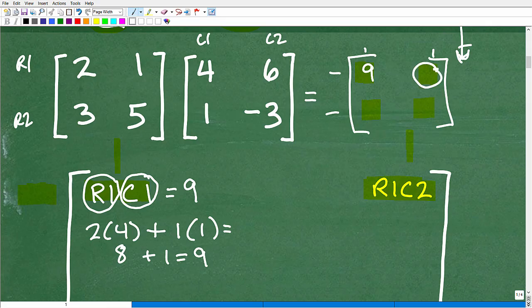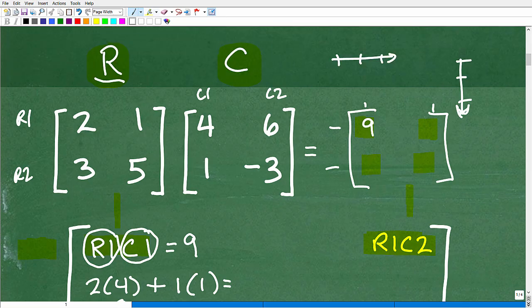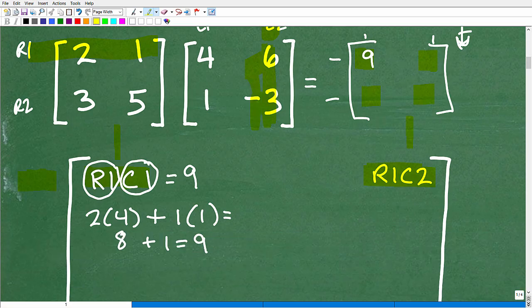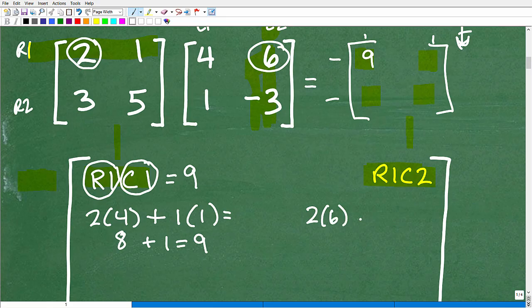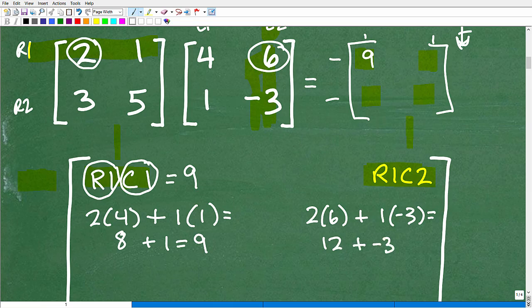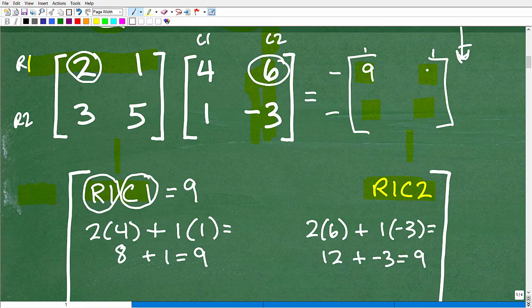Now let's do row 1, column 2. We're looking to get this answer right there. Remember, I'm going to be using the rows of this one. We're going to be using row 1, but this time we're going to use column 2. So it's going to be 2 times 6. That's going to be 12. So 2 times 6, and then we're going to add 1 times negative 3. That's going to be 12 plus negative 3, and that will be a positive 9. We've got a 9 again.